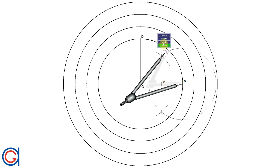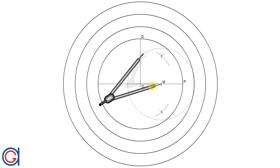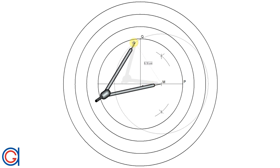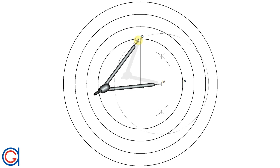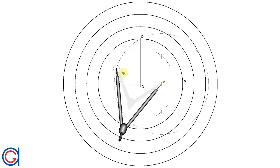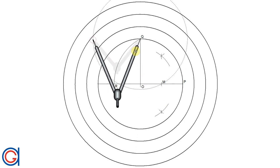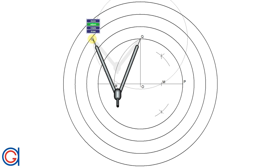So now with our compass centered on M and radius MQ, we scribe an arc to the left until it cuts our horizontal diameter at a new point which we will call R. This line segment QR will be the length L of one of the sides of the pentagon inscribed in the circle.